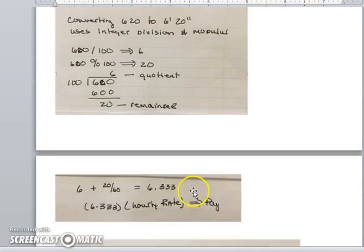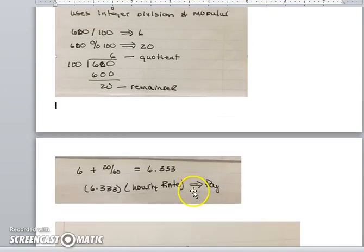In order to calculate the pay, that's a little bit trickier. You would have to convert back and take 6 hours, then take 20 minutes out of 60 minutes to get a decimal 6.333 repeating, and then you could take that decimal times your hourly rate. We will address this again with the next example.